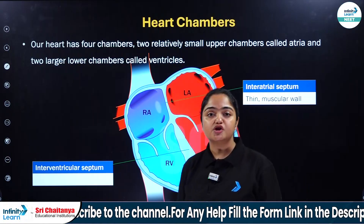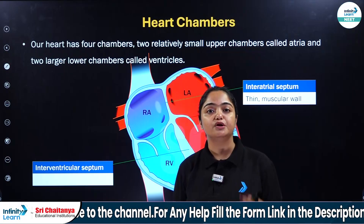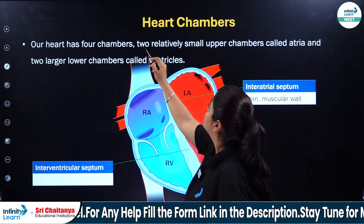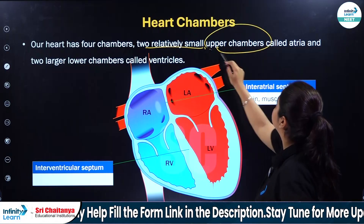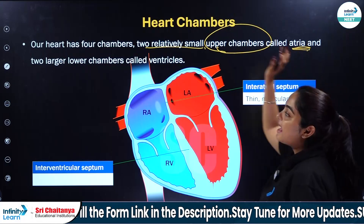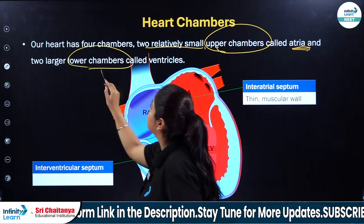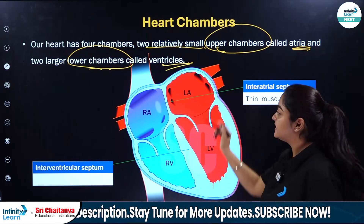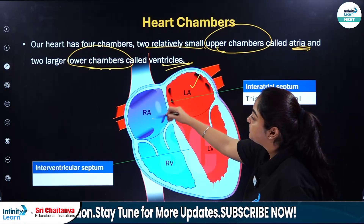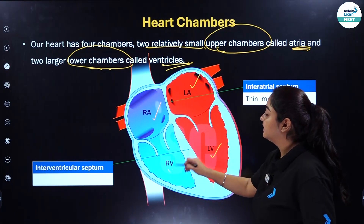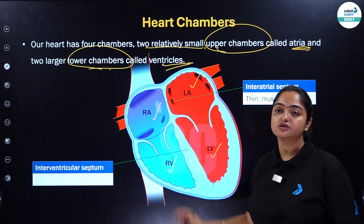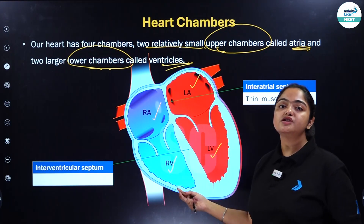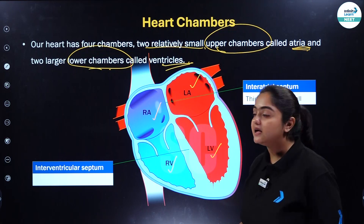When we talk about the human heart, we already know that there are four chambers. Two relatively small upper chambers which are known as the atria, and two large lower chambers which are known as the ventricles. So we have left atrium, right atrium, left ventricle, and right ventricle. The two upper chambers — the atria — are the smaller chambers, and the two lower chambers — the ventricles — are the larger chambers.